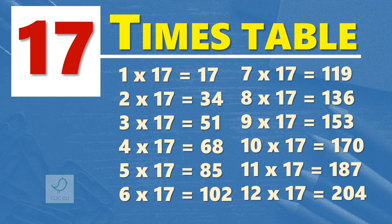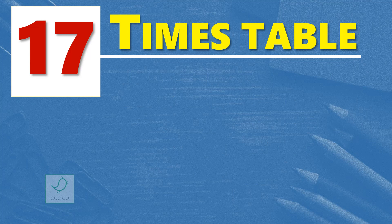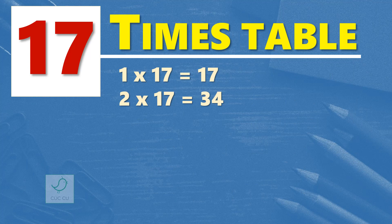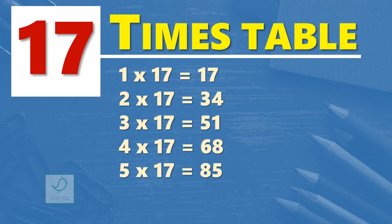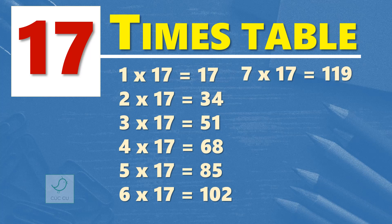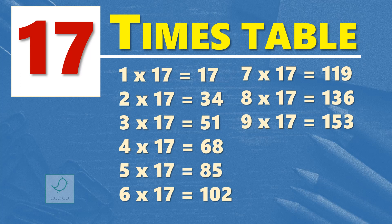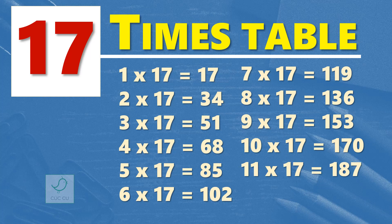One more time. 17 times table. 1 times 17 is 17. 2 times 17 are 34. 3 times 17 are 51. 4 times 17 are 68. 5 times 17 are 85. 6 times 17 are 102. 7 times 17 are 119. 8 times 17 are 136. 9 times 17 are 153. 10 times 17 are 170. 11 times 17 are 187. 12 times 17 are 204.